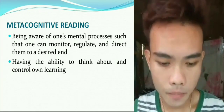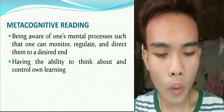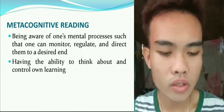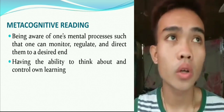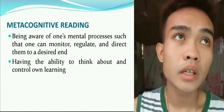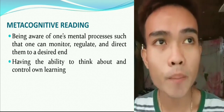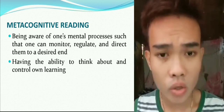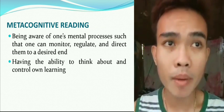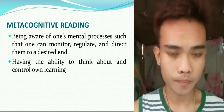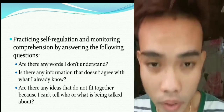Metacognitive reading involves being aware of one's mental processes so that one can monitor, regulate, and direct them to a desired end, and having the ability to think about and control one's own learning. Each one of us has different methods or strategies on how we can learn. As a student, we should know which strategies help us most easily learn about the topic or text we have read. Practicing self-regulation and monitoring comprehension by answering questions such as: Are there any words I don't understand?